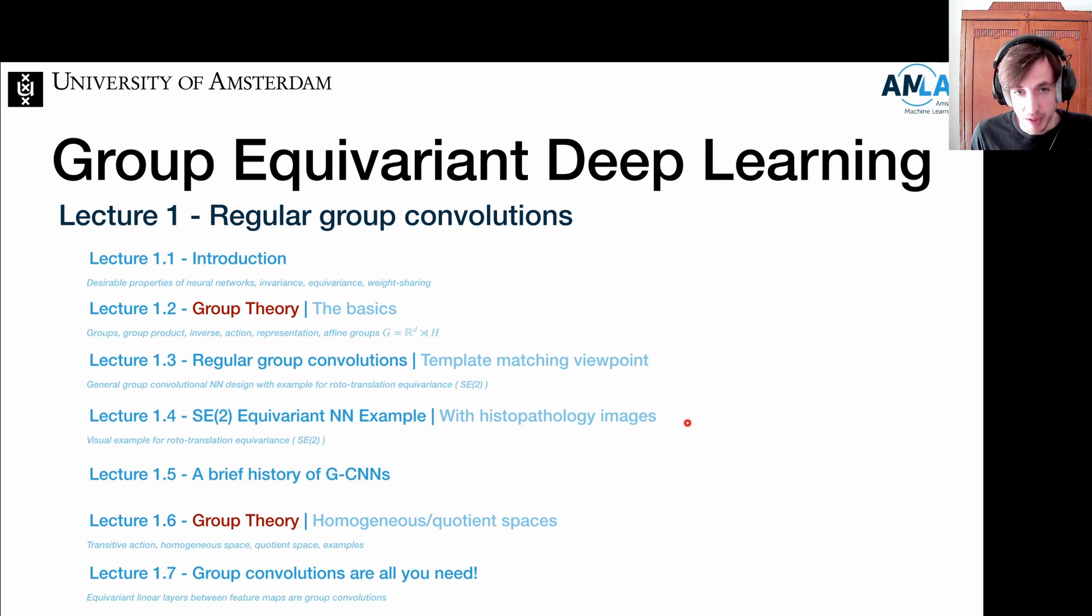In lecture 1.4, we go over an example where we build a group equivariant neural network to solve a problem in histopathology, namely the classification of cancer tissue. I would like to place this lecture in context and provide a brief history of group convolutional neural networks. Then I would like to move on to the final part of this lecture: group convolutions are all you need. This is a fancy statement, but it has very strong theoretical underpinning.